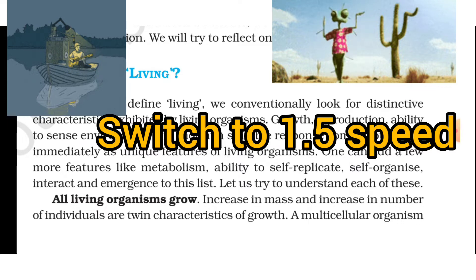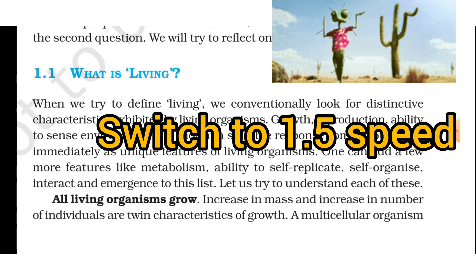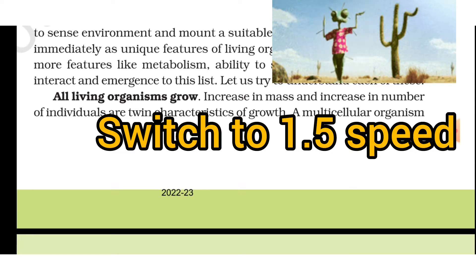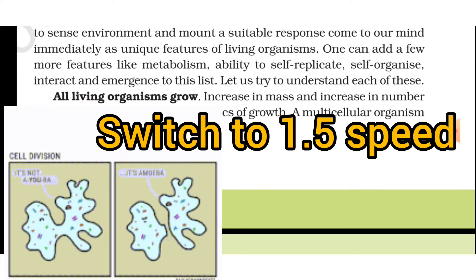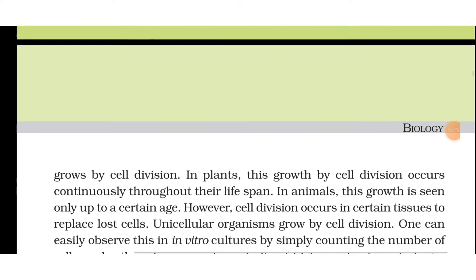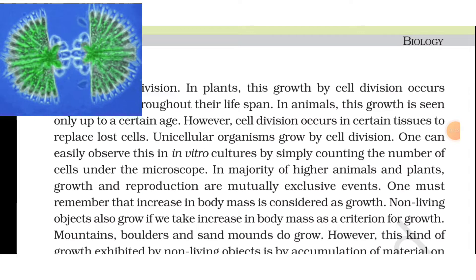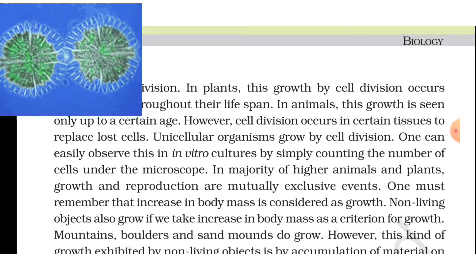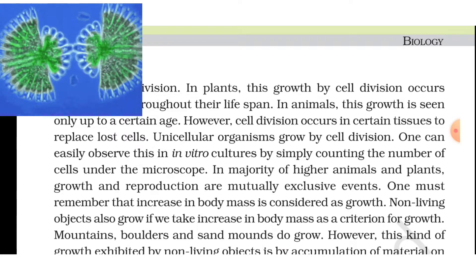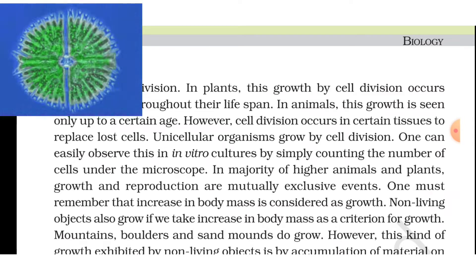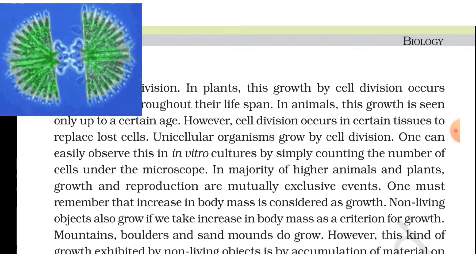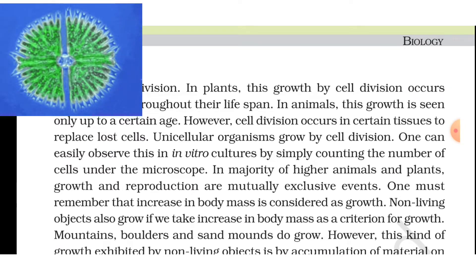Let us try to understand each of these. All organisms grow. Increase in mass and increase in number of individuals are twin characteristics of growth. A multicellular organism grows by cell division. In plants, this growth by cell division occurs continuously throughout their lifespan. In animals, this growth is seen only up to a certain age; however, cell division occurs in certain tissues to replace lost cells.